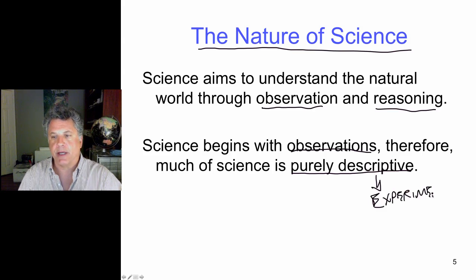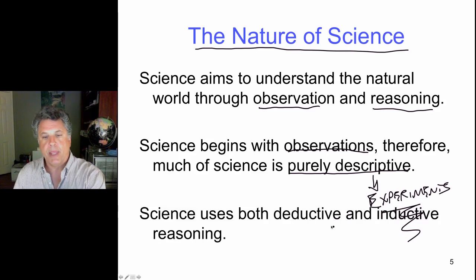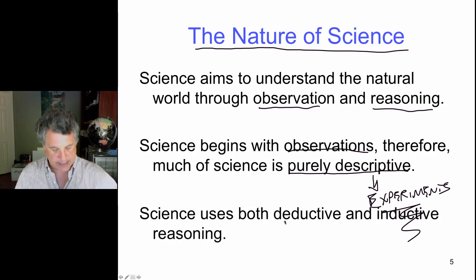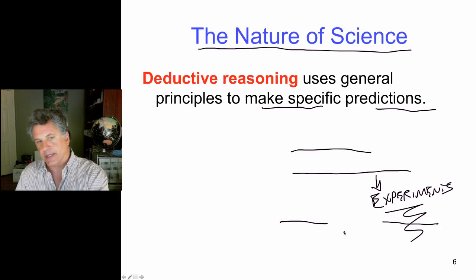And experiments as we will see are used to test ideas, test hypotheses and to eventually build up theories. And we can formalize this by saying that science uses two types of reasoning, deductive reasoning and inductive reasoning.